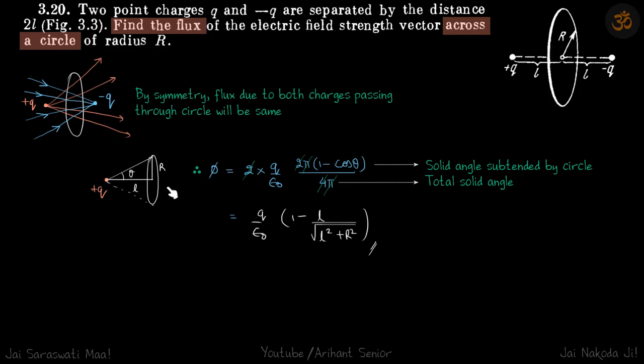Now here we are going to use the concept of solid angle. If a circle makes an angle theta with the radial line, in this conical shape the solid angle through that conical shape is 2π times one minus cos theta.